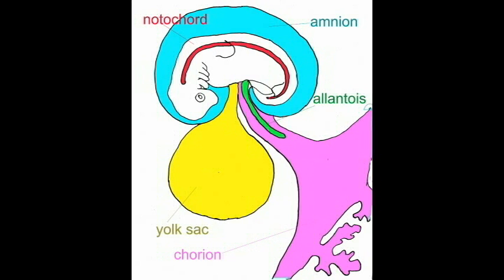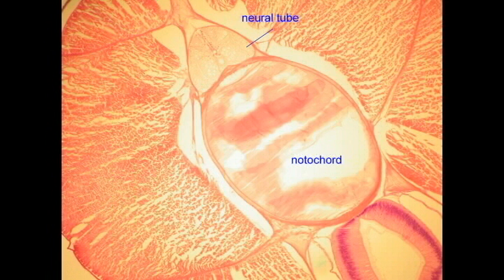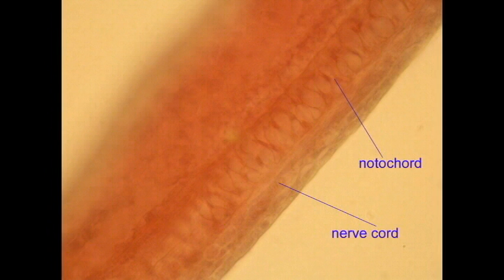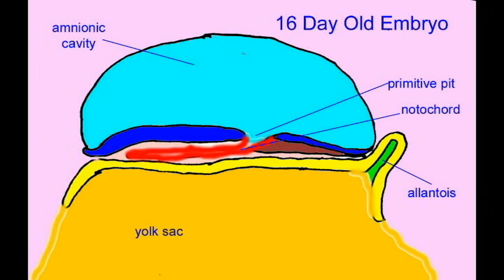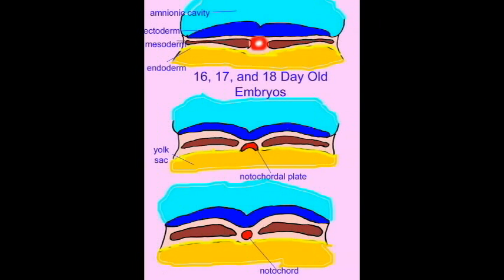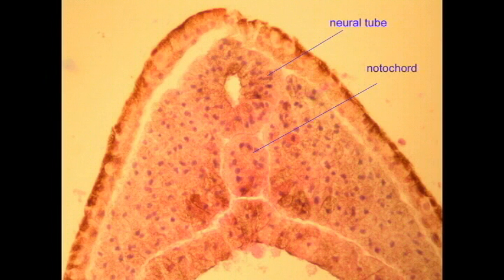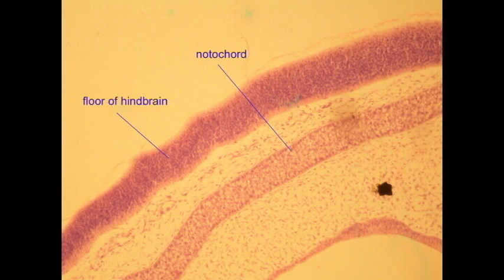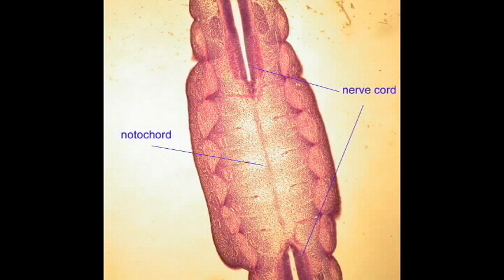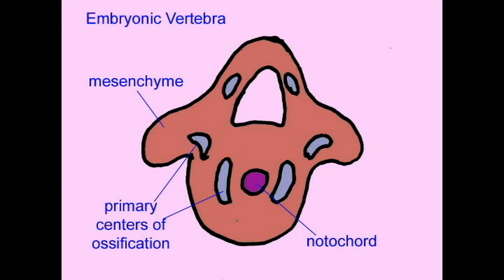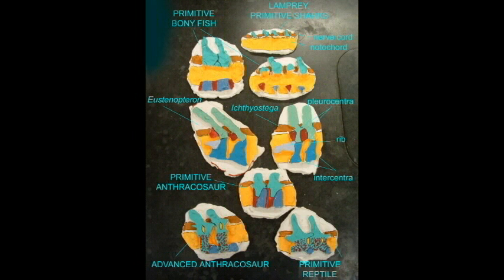Although the notochord no longer serves as a longitudinal support in most modern vertebrates, because it has been replaced by a vertebral column, the notochord is still present in all vertebrate embryos. Human embryos possess a notochord running from head to tail as their initial longitudinal support. The human vertebral column develops as small pieces of cartilage around the notochord, which are converted to bone, expand, and fuse, and eventually replace the notochord. The fossil record indicates that these same steps occurred during the evolution of vertebrae.